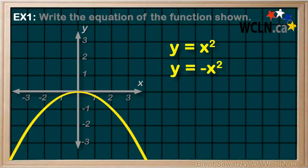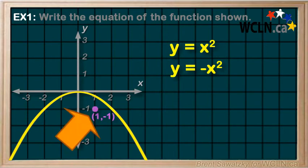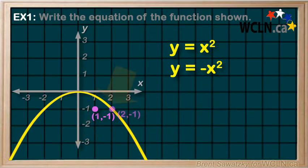Now, a standard quadratic, with a vertical reflection, would cross through (1, -1). And our graph doesn't pass through this point. Instead, it passes through (2, -1). So, yeah, our graph is definitely wider than that base.